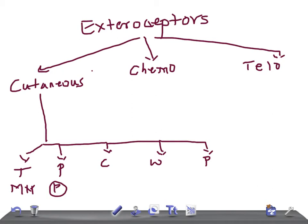The cold receptors are known as Krause's end bulb. The warm receptors are known as Ruffini's organ. For pain, the receptors are known as nociceptors — the free nerve endings.